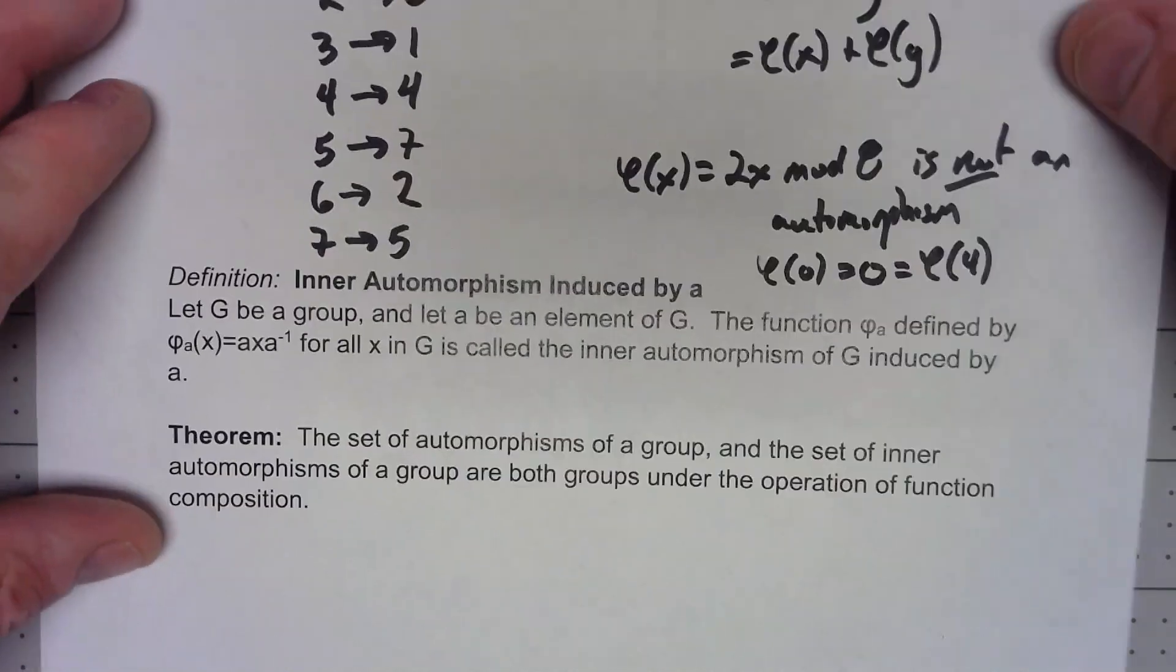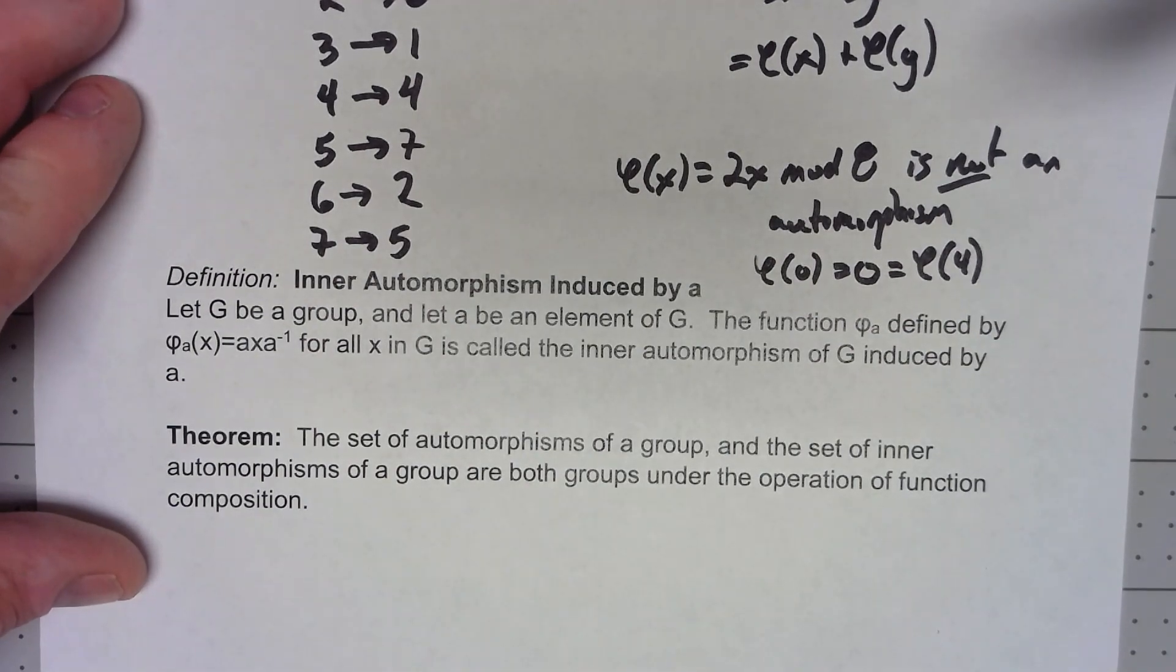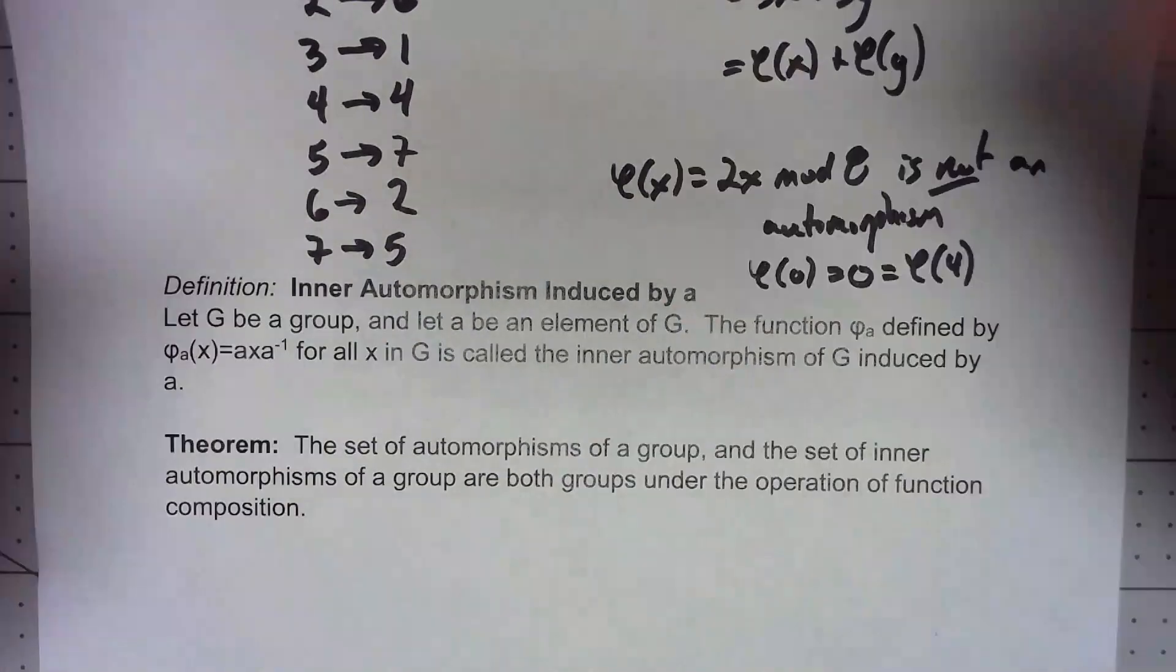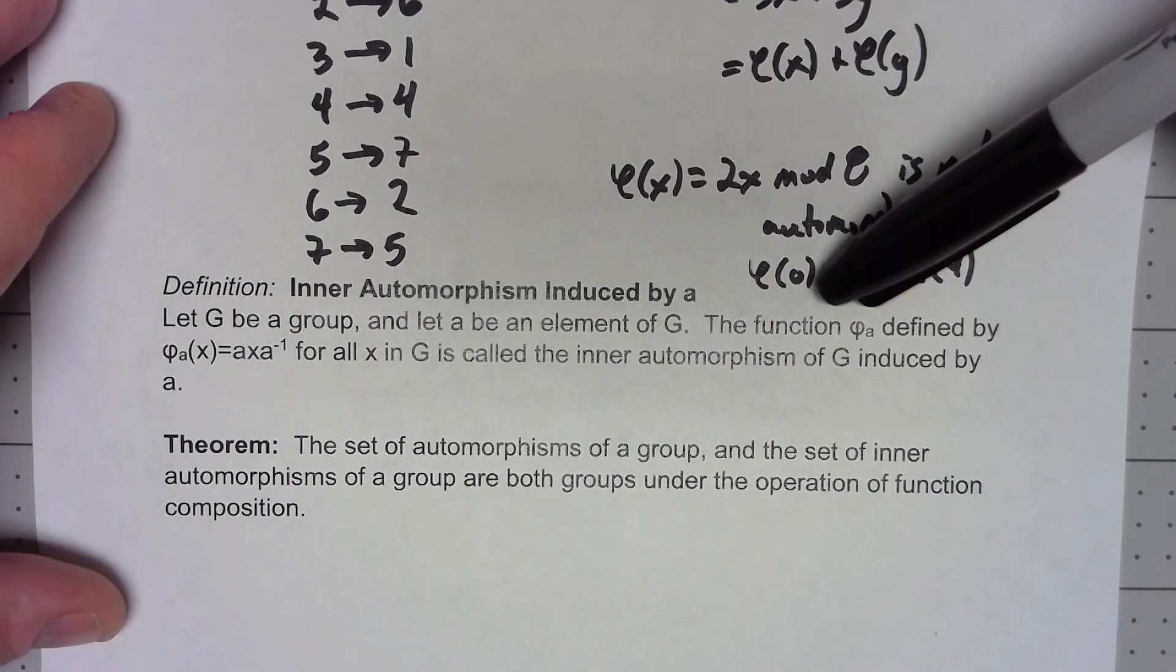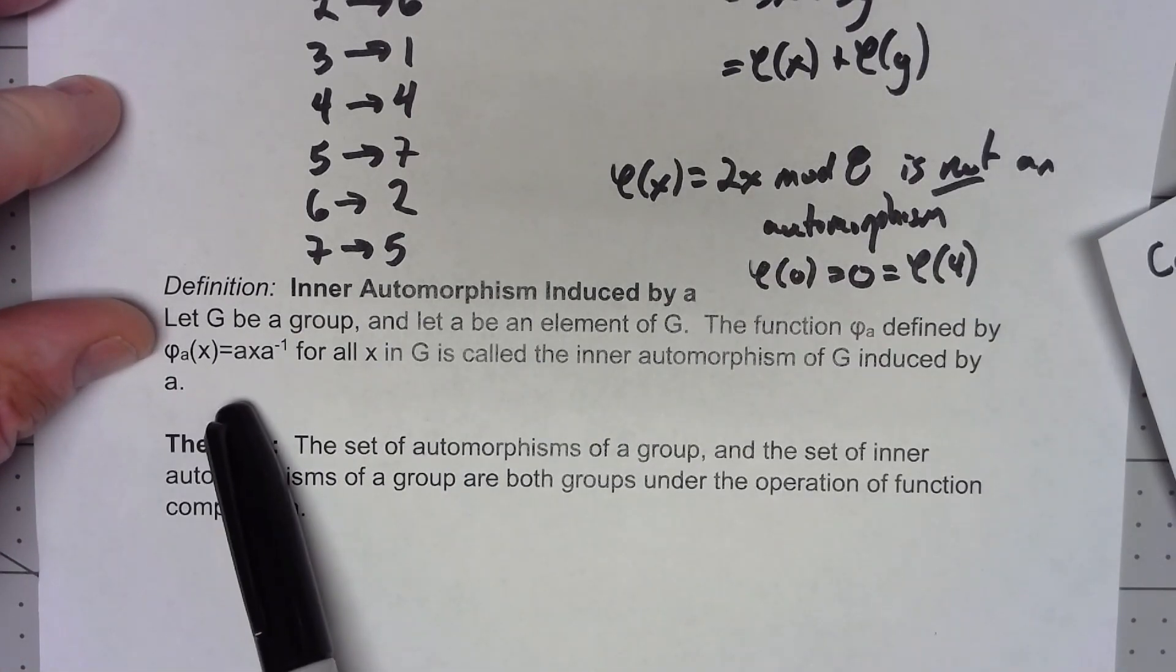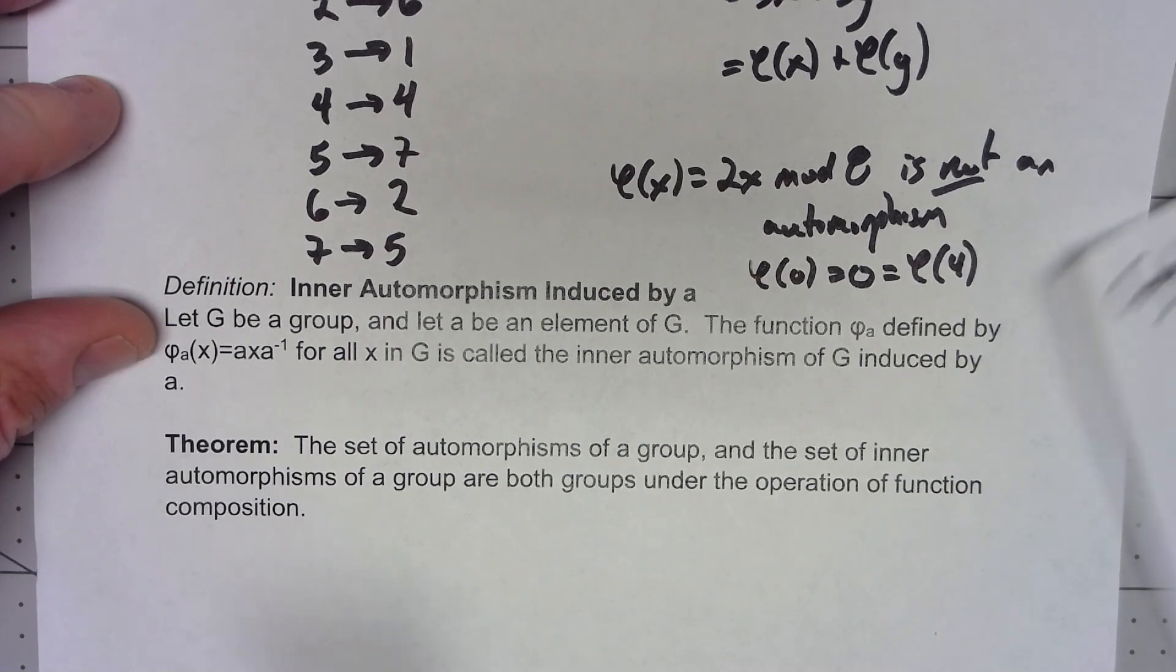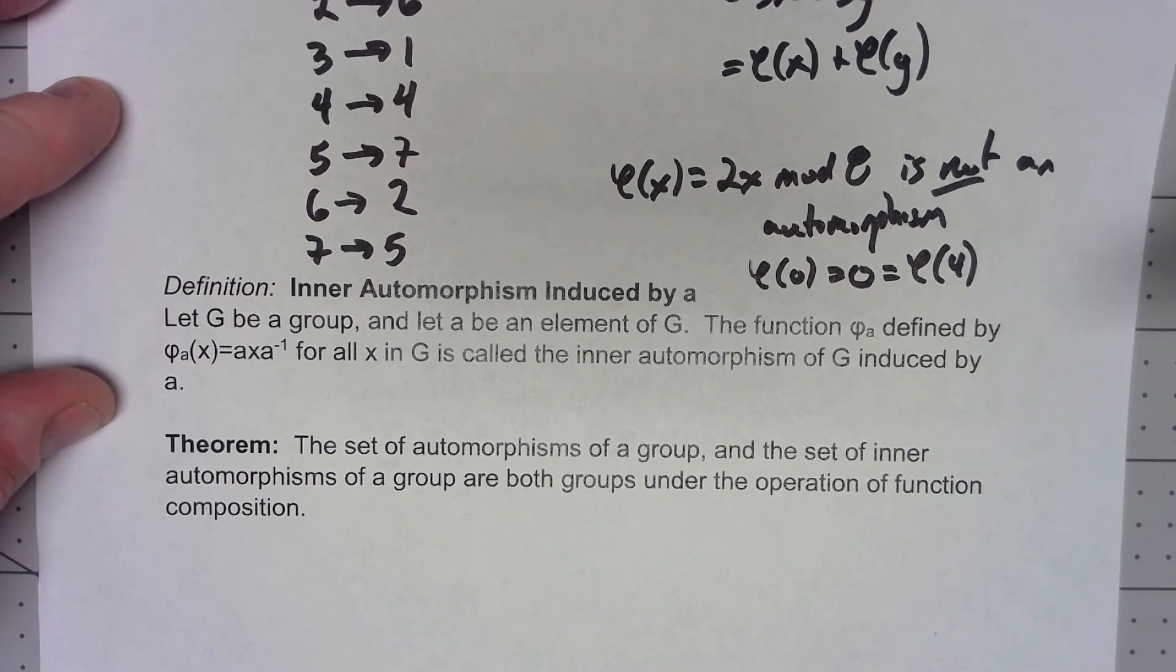There's a particular kind of automorphism here called the inner automorphism induced by an element. It doesn't matter what your group is. If you define a function by taking that group element times x times the inverse of that group element, that's a particular kind of automorphism called the inner automorphism. And if we look at the set of all of those automorphisms, that's also a group.